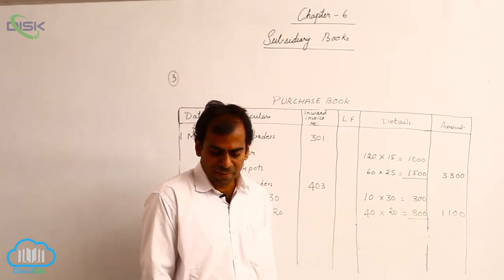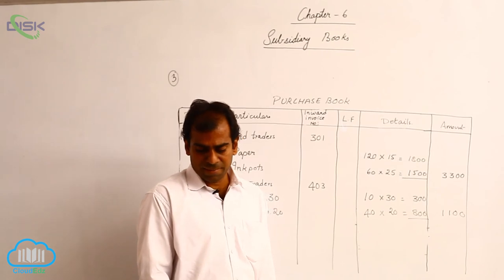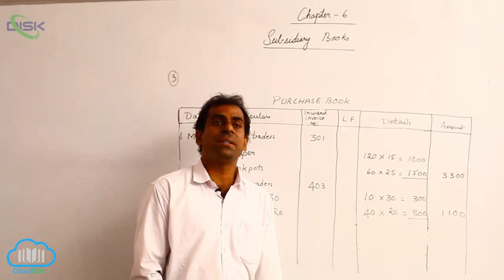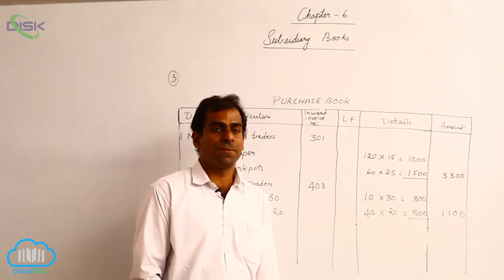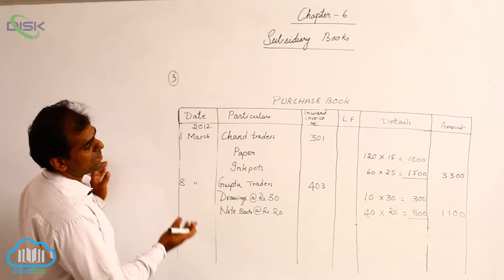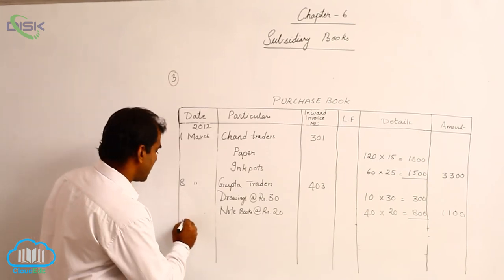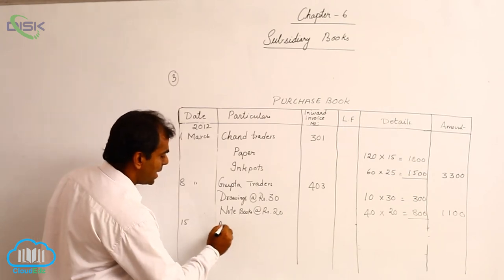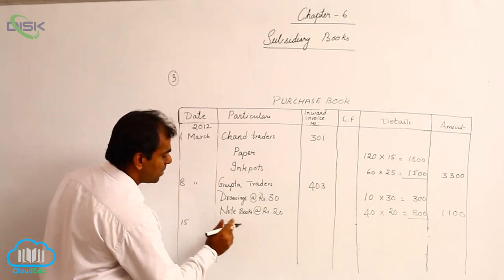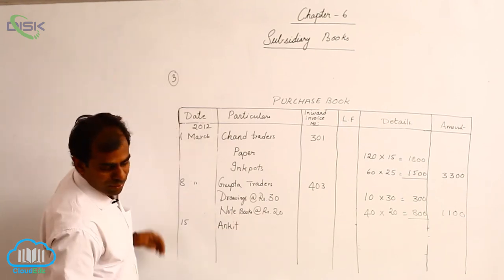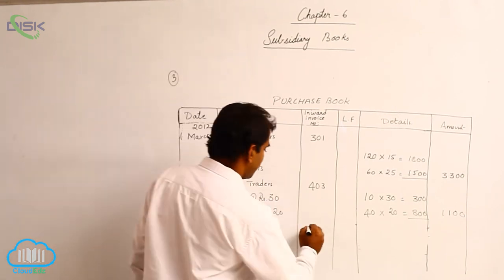Next, on the 15th, we have purchased goods from Ankith, rupees 10,000 as per invoice number 450. Now it is a direct purchase; mention of items are not there. So what we simply do is record the date in the date column and the name of the supplier in the particular column. Here it is Ankith, and the invoice number is 450.